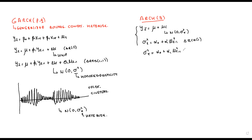To generalize to an ARCH(q) model, sigma-squared of t equals alpha-0 plus alpha-1 u(t-1)^2 plus alpha-2 u(t-2)^2, continuing q times up to alpha-q times u(t-q)^2. This is the ARCH(q) model.